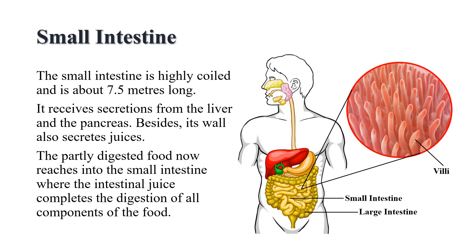The small intestine is highly coiled and is about 7.5 meters long. It receives secretions from the liver and pancreas, and its wall also secretes juice. The liver is a reddish-brown gland situated in the upper part of the abdomen on the right side. It is the largest gland in the body. It secretes bile juice that is stored in a sac called the gallbladder. The bile plays an important role in the digestion of fats. The pancreas is a large green-colored gland located just below the stomach. Pancreatic juice acts on carbohydrates, fats, and proteins and changes them into simpler form.